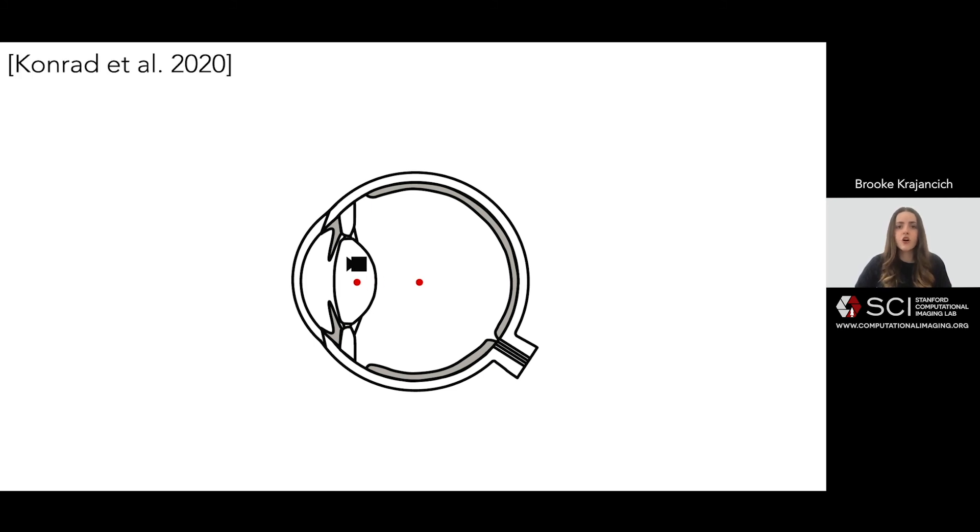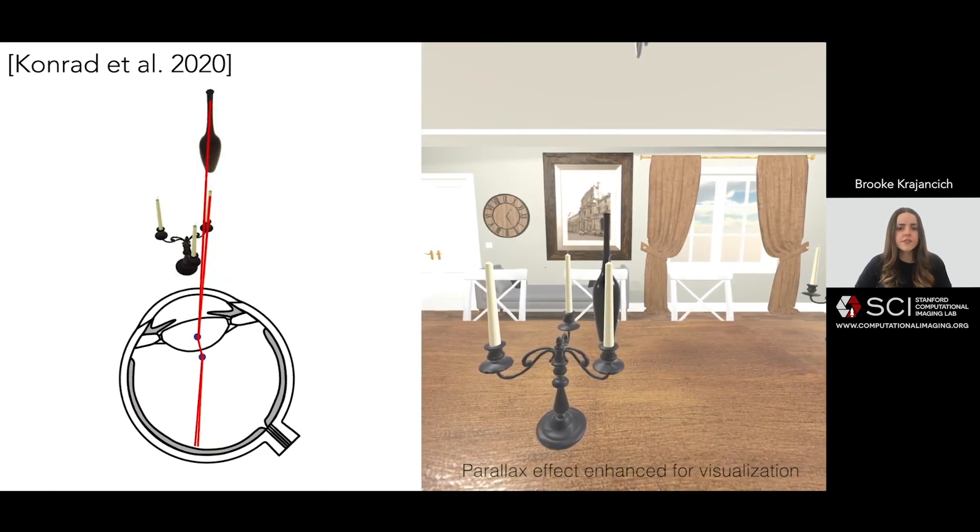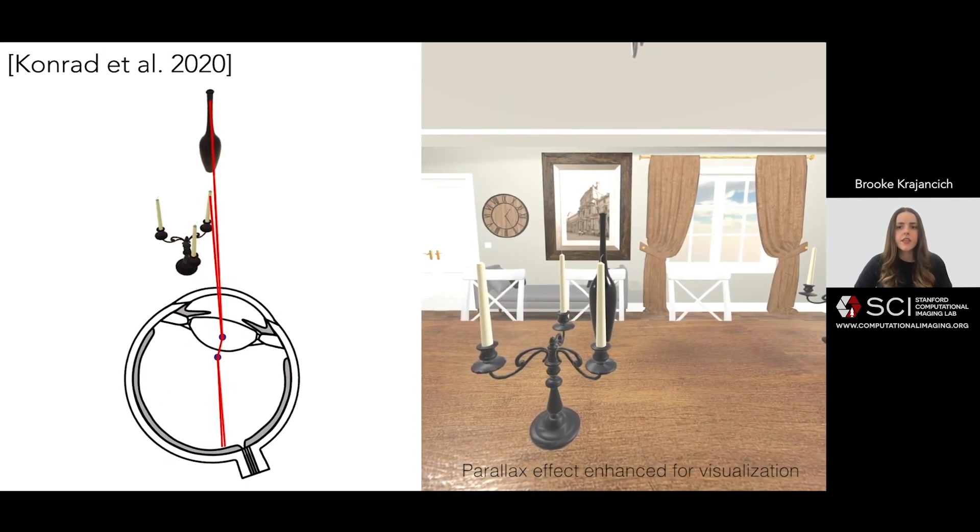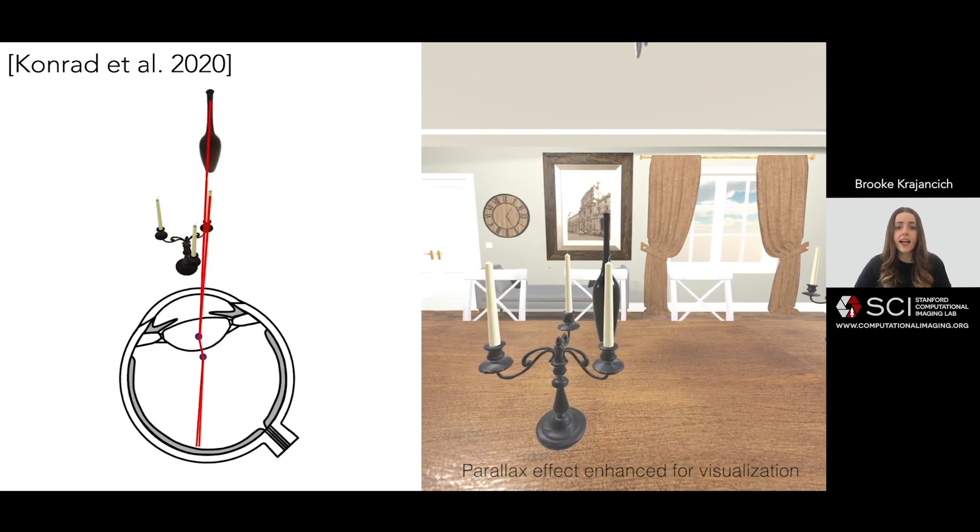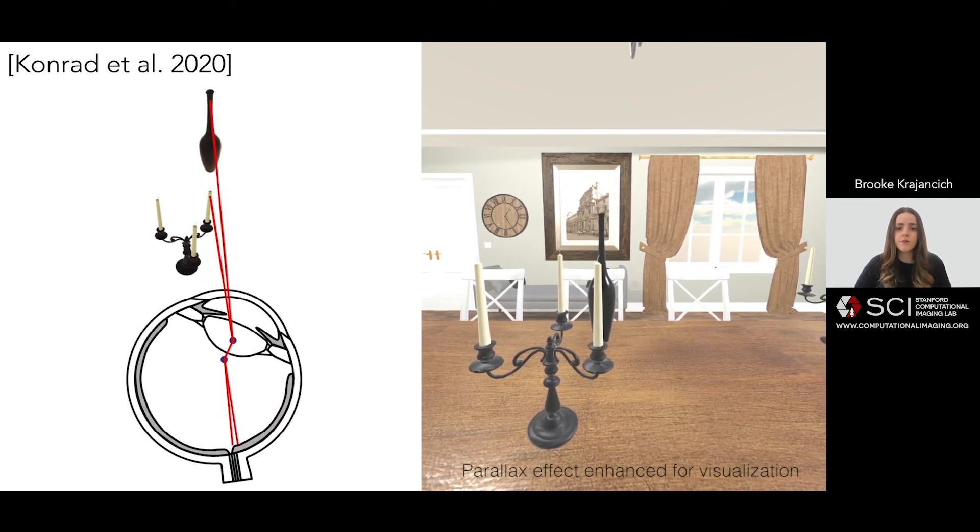Earlier this year, Konrad et al used this literature to estimate its position, showing that as the eye rotates, this seemingly small offset creates a significant enough change in perspective to be visible in VR. They referred to this effect as ocular parallax and showed its ability to assist in optimal depth perception.